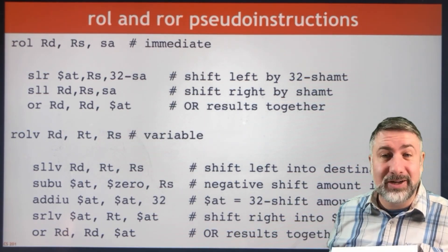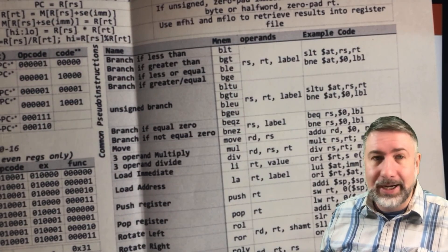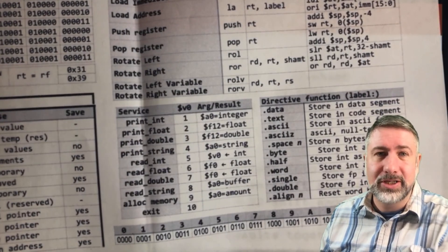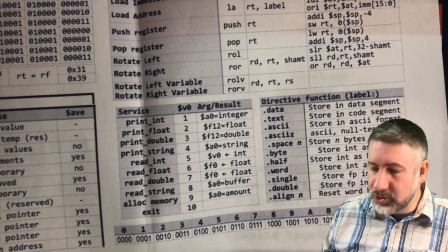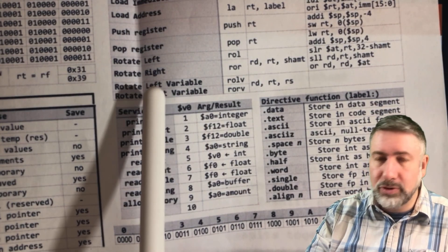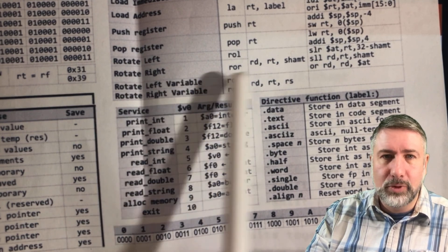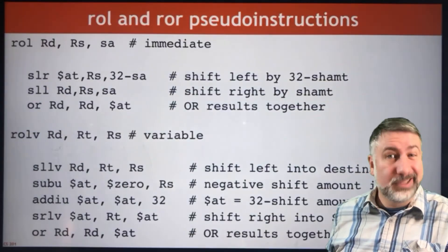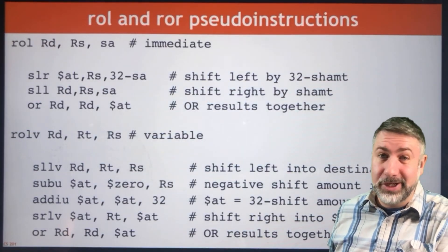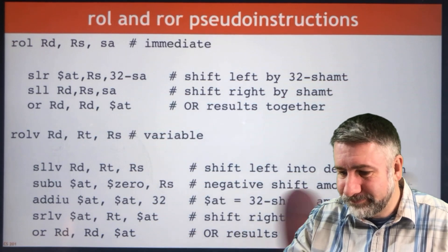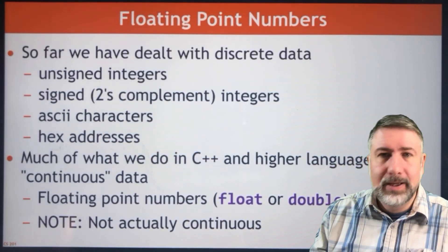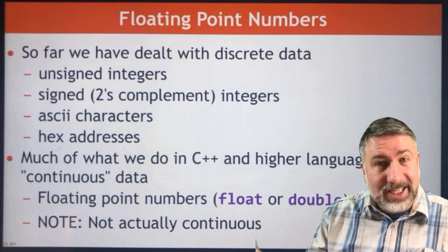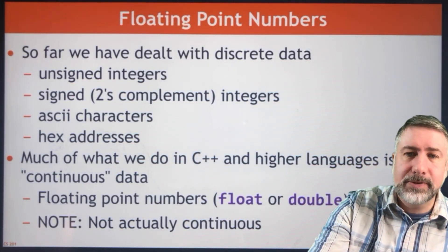Just as a bonus for those who have stuck around to the end: the pseudocode to do variable rotates is not on the reference sheet, and that should give you some useful information. The next video will talk about floating-point numbers.